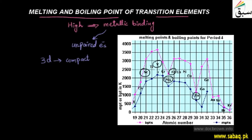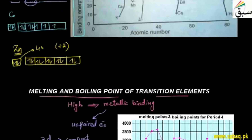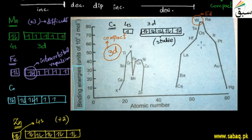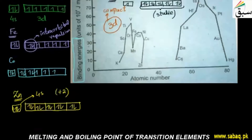Consequently, melting and boiling points decrease at those points. When we relate this to the graph, we can also see a graph for period 6 and for the 5d series, where tungsten shows the maximum metallic binding.